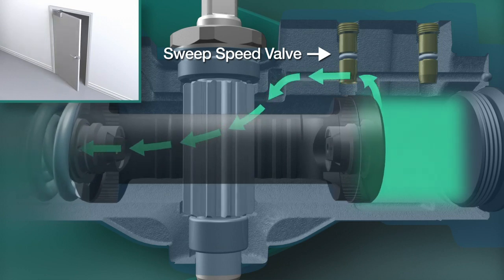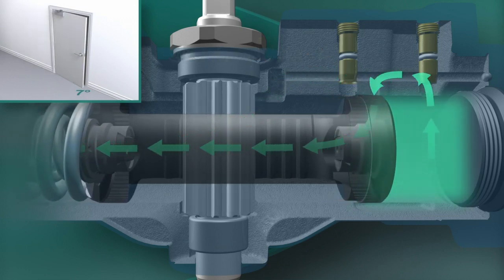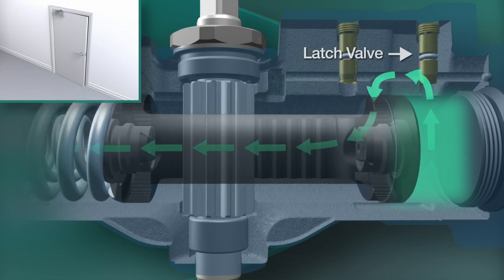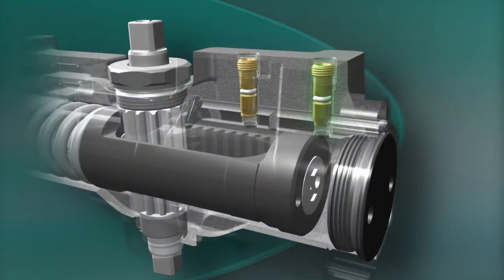The sweep speed valve meters the oil flow from wide open to within about 7 degrees of closed. The latch valve then takes over, controlling the last 7 to 10 degrees of the closing swing. The latch and sweep speed of the door can be increased or decreased to obtain the desired door motion.